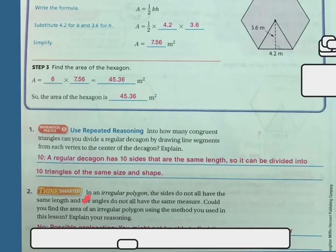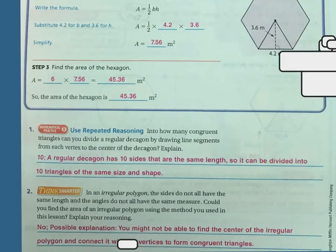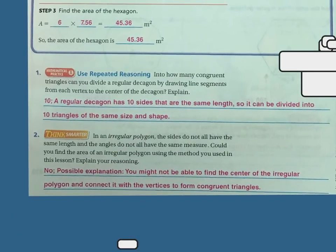Number two, think smarter. In an irregular polygon, the sides do not all have the same length and the angles do not all have the same measurement. Could you find the area of irregular polygon using the method that you used in this lesson? Explain your reasoning. No, you can't because you might be able to find the center of the irregular polygon and connect it, but they're not going to all be the same congruent triangles because they're all going to be different lengths and different sizes. So you wouldn't be able to just multiply it. You'd have to find each one of the segments separately and then add them together.